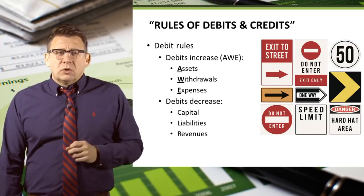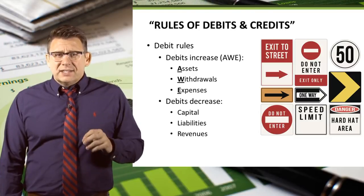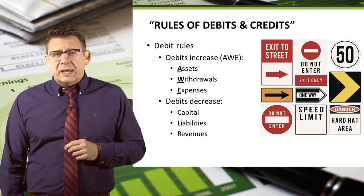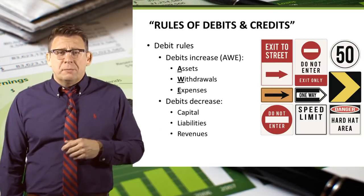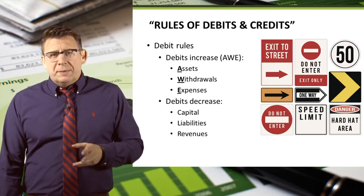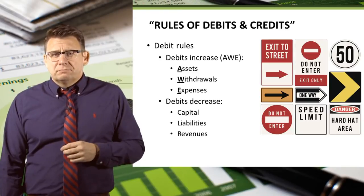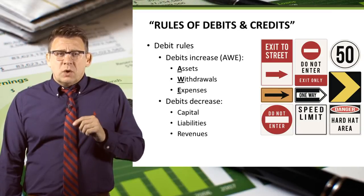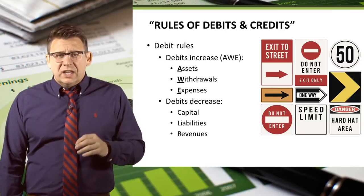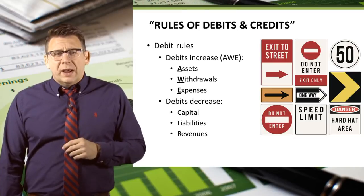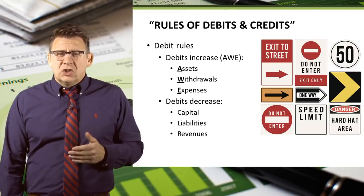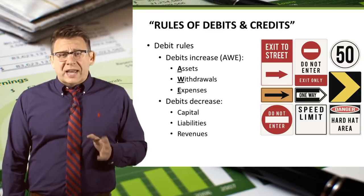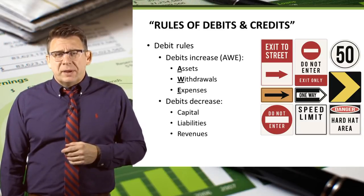The debit rules are as follows: assets, withdrawals, and expenses all increase by debits. I remember this with the acronym AWE — debits increase AWE. The normal balance of an account is what we would expect to see in a particular account, and the normal balance is always what increases the account. So the normal balance for assets, withdrawals, and expenses are debit balances.